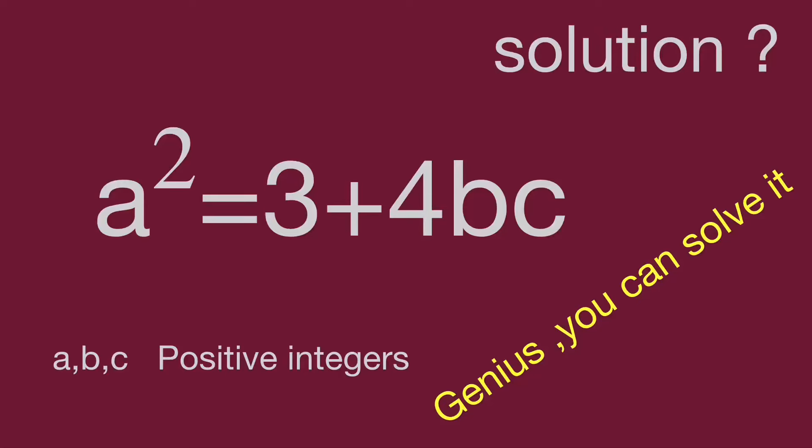Hello, you are watching Balahippo Math Genius Riddle. A simple equation: a squared equals 3 plus 4bc, where a, b, c are integers. Find the solutions.